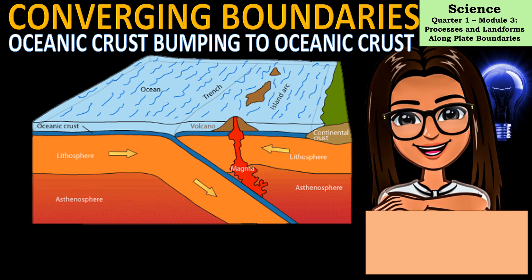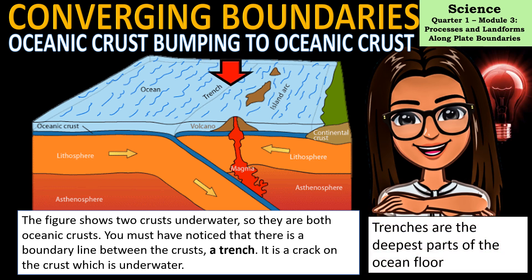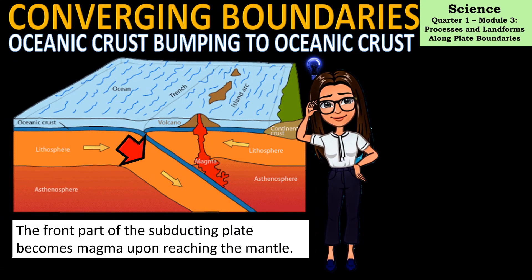Another type of converging boundary happens when two oceanic crusts collide. Both crusts are underwater and there is a boundary line between them — a trench — which is a crack on the crust underwater. Trenches are the deepest parts of the ocean floor. The front part of the subducting plate becomes magma upon reaching the mantle.